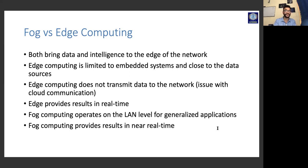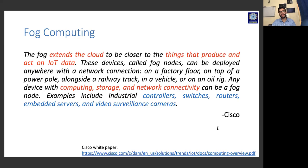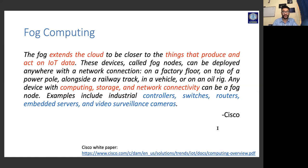This is a general definition of fog computing given by Cisco, along with a paper by Bonomi — these are the two who actually came up with fog computing. The definition reads: 'The fog extends the cloud to be closer to the things that produce and act on IoT data. These devices, called fog nodes, can be deployed anywhere with a network connection — on a factory floor, on top of a power pole, alongside a railway track, in a vehicle, or on an oil rig. Any device with computing, storage, and network connectivity can be a fog node. Examples include industrial controllers, switches, routers, embedded services, and video surveillance cameras.'